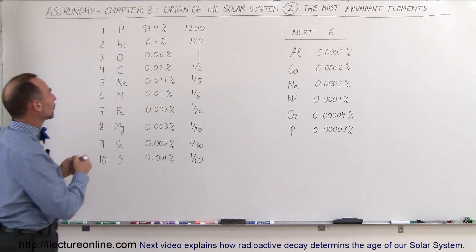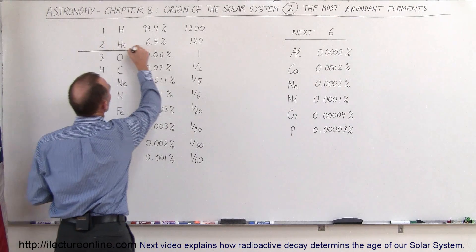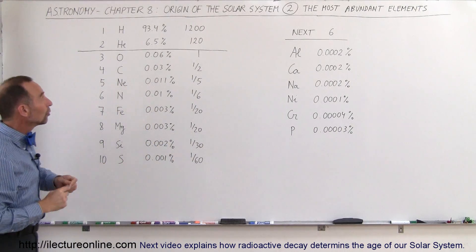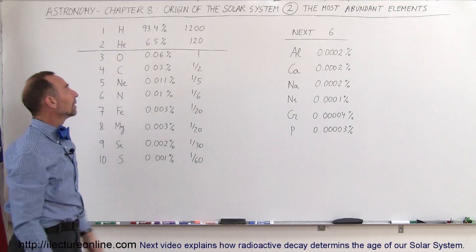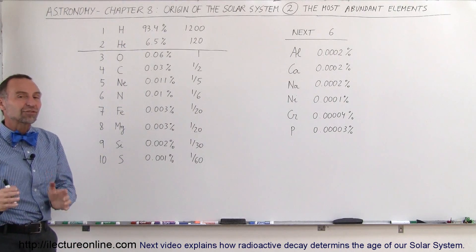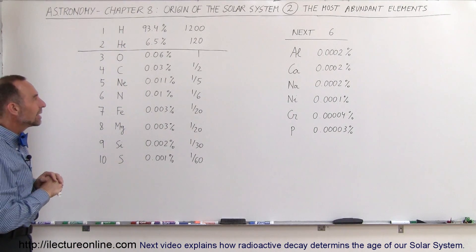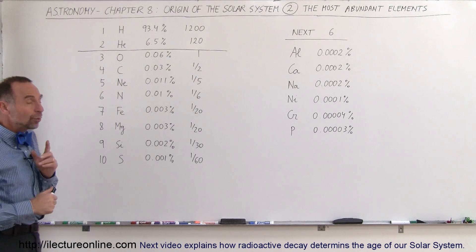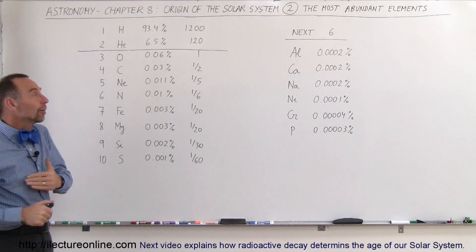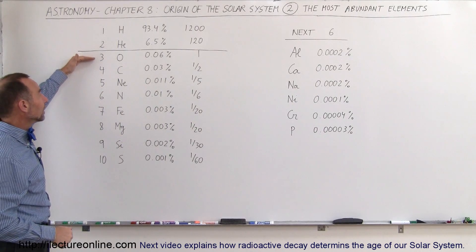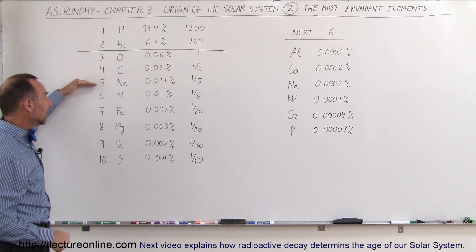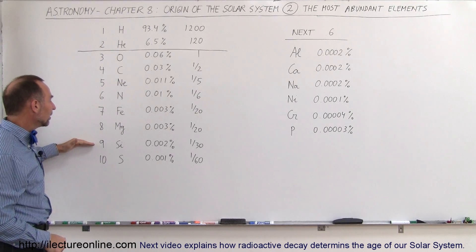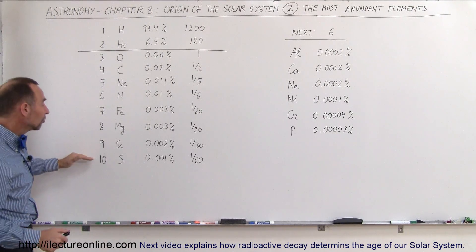If we take a look at the first two most abundant elements, it's hydrogen and helium. Hydrogen and helium take up at least 99% of all the mass in the galaxy, and presumably also in the universe. What's really surprising is that the third most abundant element is oxygen, then carbon, neon, nitrogen, iron, magnesium, silicon, and rounding off the top ten is sulfur.